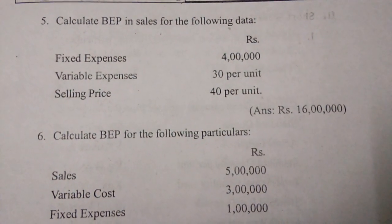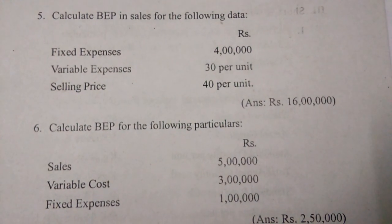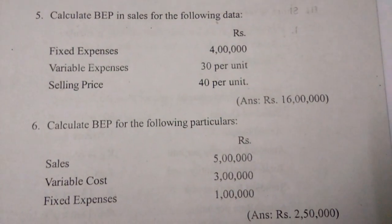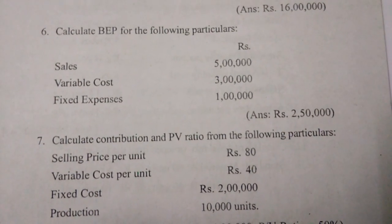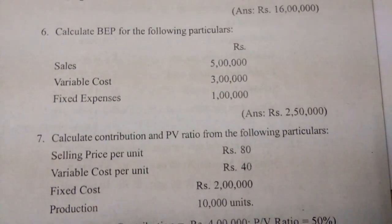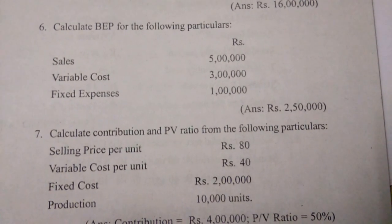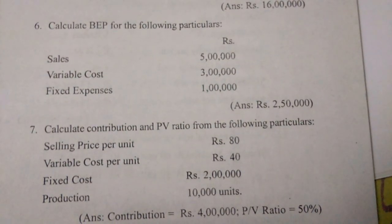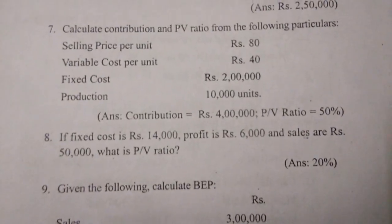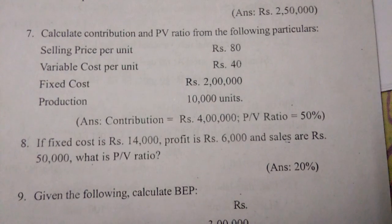Fifth one: calculate BEP in sales from the following data — fixed expenses, variable expenses thirty rupees per unit, selling price forty rupees per unit — that equals sixty lakhs. Sixth one: calculate BEP for the following particulars — sales five lakhs, variable cost three lakhs, fixed cost one lakh — answer is two lakhs fifty thousand.